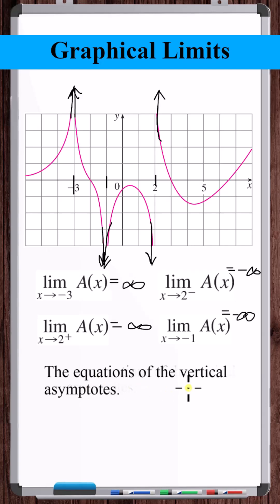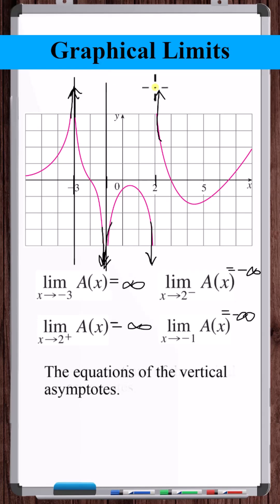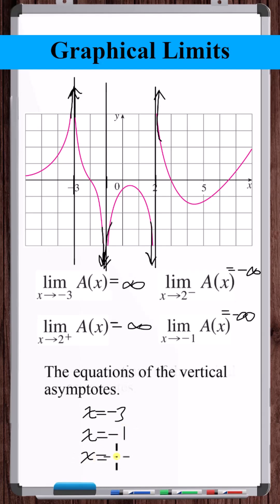The equations of the vertical asymptotes: there's a vertical asymptote here, here, and here. So x is equal to minus 3, x is equal to minus 1, and x is equal to 2.